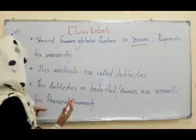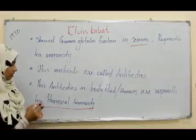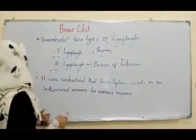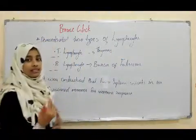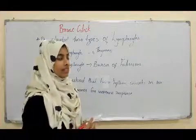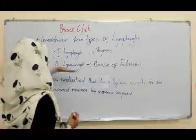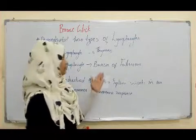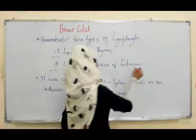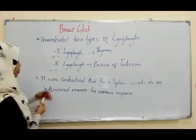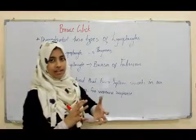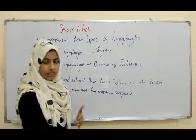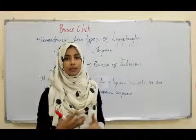Bruce Glick was a scientist who demonstrated, by using chickens, that two types of lymphocytes participate in immune activity: T lymphocytes and B lymphocytes. T lymphocytes are involved in cell-mediated immunity, while B lymphocytes are associated with humoral immunity. This was an important identification by Bruce Glick in understanding immunity in living organisms.